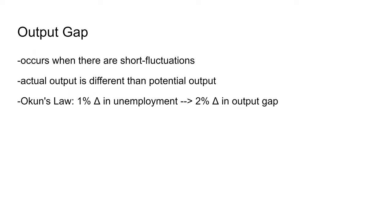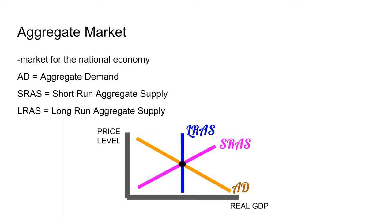Now we talk about the aggregate market, which is the market graph for our national economy. The three curves are aggregate demand, long-run aggregate supply, and short-run aggregate supply. On the y-axis you have the price level, and on the x-axis you have real GDP.